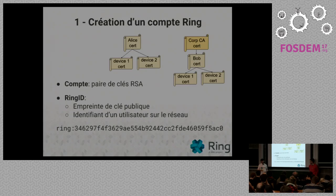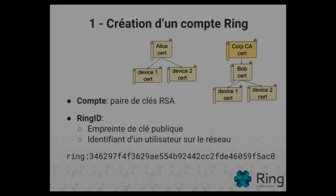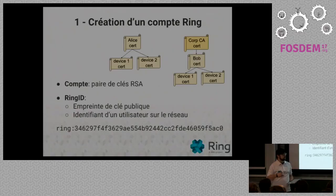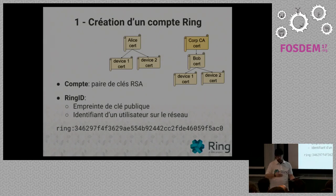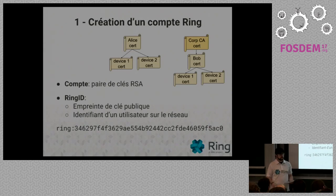Recently, just before the beginning of 2017, Beta 2 was released, which includes username functionality and another major advancement: the ability to add multiple devices and chain them into a master account. So people who use communication systems on multiple devices can now use the same Ring account on more than one device, which was not possible before, using the DHT as well.